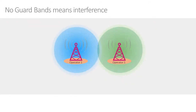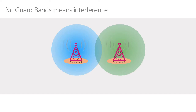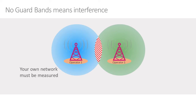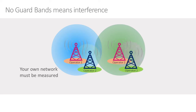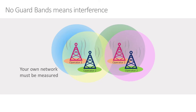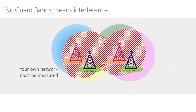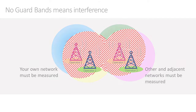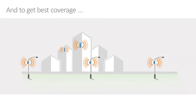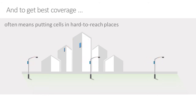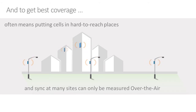Another change in 5G is the elimination of guard bands between operators. Traditionally within an operator, we would worry about interference particularly at the cell edge, where the two cells come together and RF signals will interfere. One still needs to do RF over-the-air synchronization measurements on a cell-by-cell basis within an operator. However, now we also need to measure a second operator's network as well, because the elimination of guard bands means two operators risk interfering at the frequency spectrum edges. To provide good signals to users, we have to put cells in hard-to-reach places, so the only way to measure this is to use an over-the-air measurement.